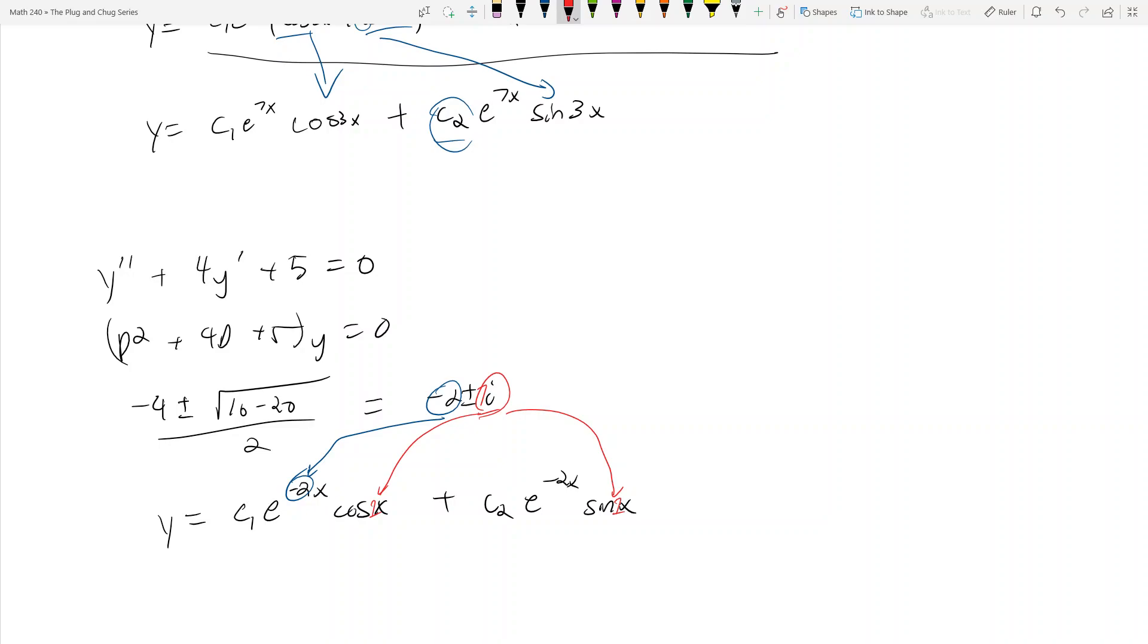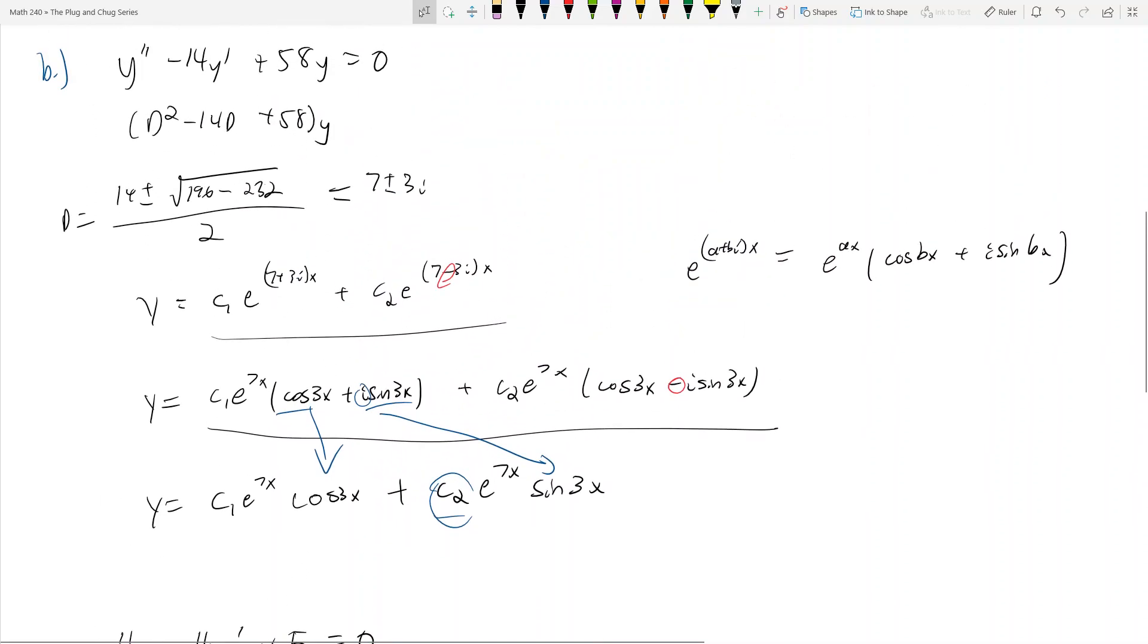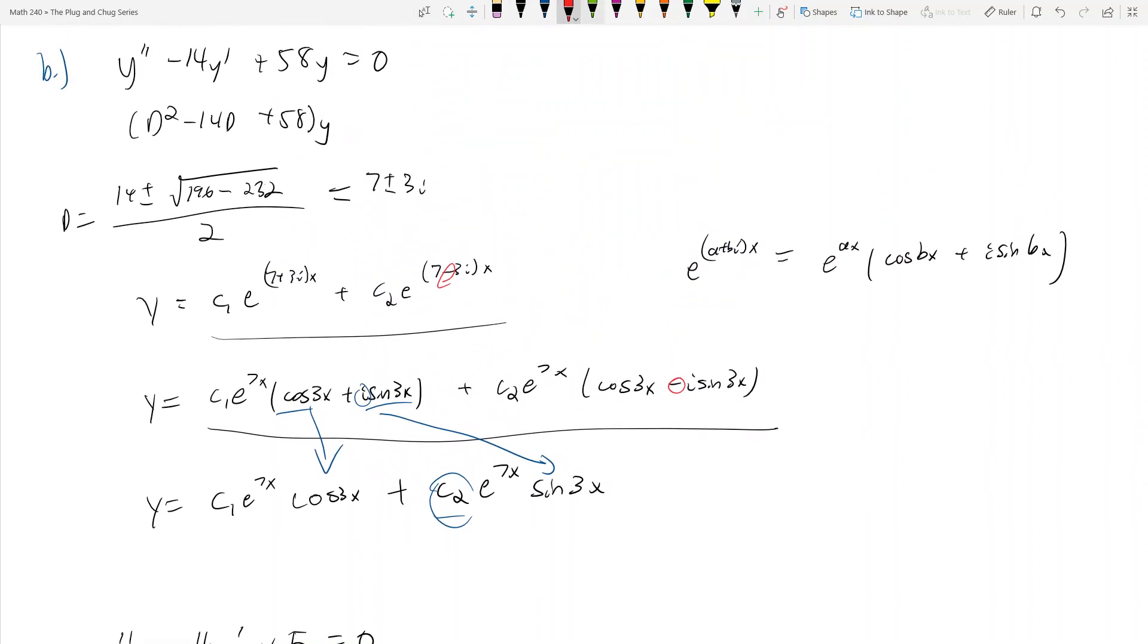For complex valued ones, you find the root. In this case, this is 7 plus 3i. The 7 goes here, the 7 goes here, and then the 3 goes to the sine and the cosines. That's what you do with complex valued roots of differential equations.